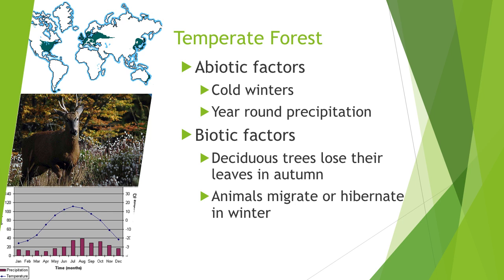Then we have temperate forests. Abiotic factors include cold winters and year-round rain. Biotic factors include deciduous trees, which lose their leaves when the seasons change, and animals that migrate or hibernate. Mississippi is in the temperate forest biome.